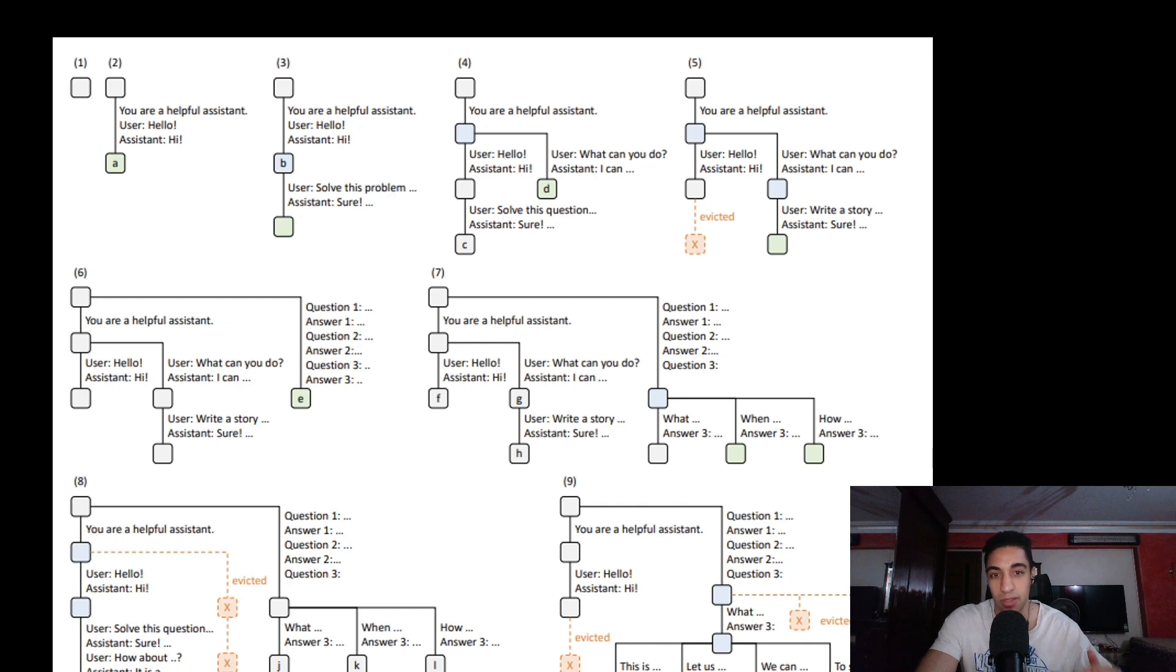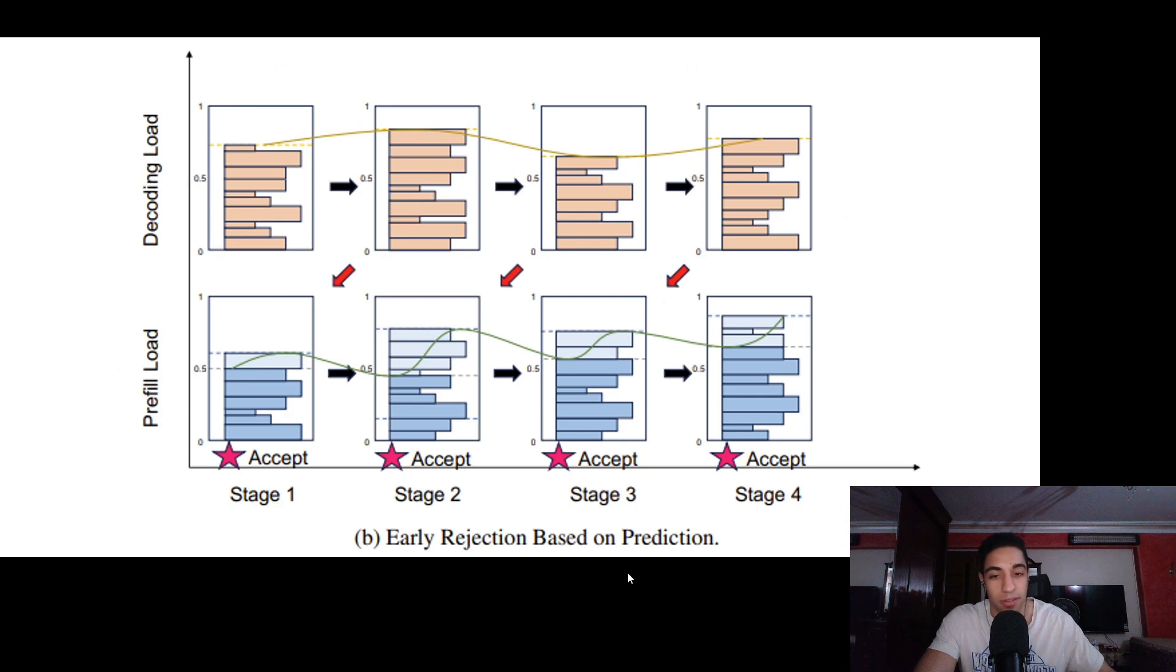This is another simple optimization called early rejection. If you have a prediction model that tells you whether you will be able to service this request or not once you receive it, it will help you avoid the struggle where you accept the request, go through the prefill phase, and then while doing the decode phase you realize that you can't service this request. It's helpful to from the beginning say no, I can't service this one.